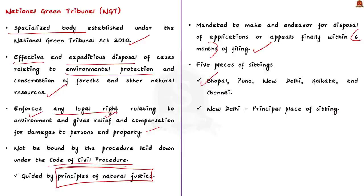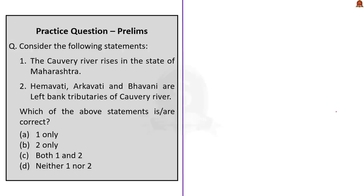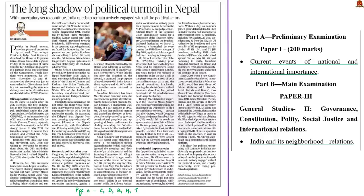The NGT has a total of five places of sitting: Bhopal, Pune, New Delhi, Kolkata and Chennai, among which New Delhi is the principal place of sitting. In this article, we have learnt about the Kaveri river — its origin, its basin and its tributaries — as well as about the NGT in brief.